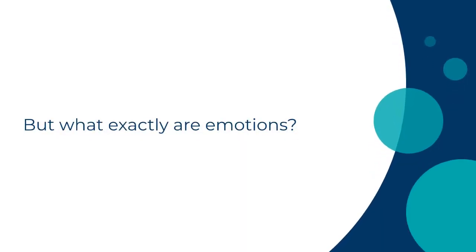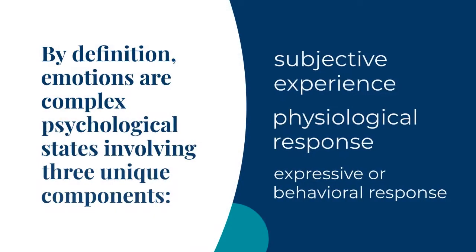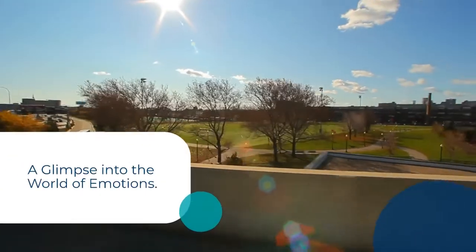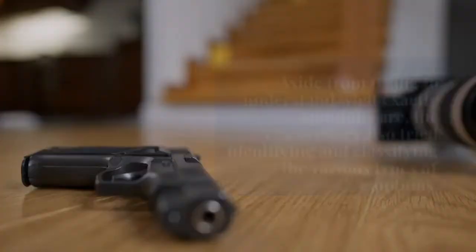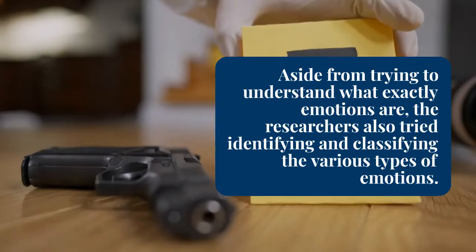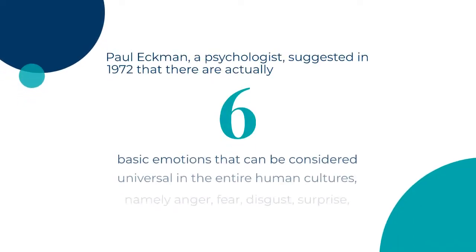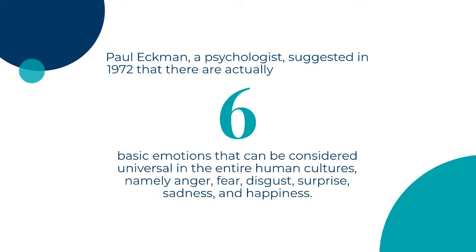Emotions seem to be like a king that rules your day-to-day life. The decisions that you make are based on whether you are happy, sad, bored, frustrated, or angry. Your hobbies and activities are chosen based on the kind of emotions that they incite. But what exactly are emotions? By definition, emotions are complex psychological states involving three unique components: subjective experience, physiological response, and expressive or behavioral response.